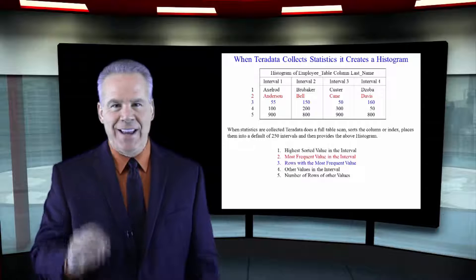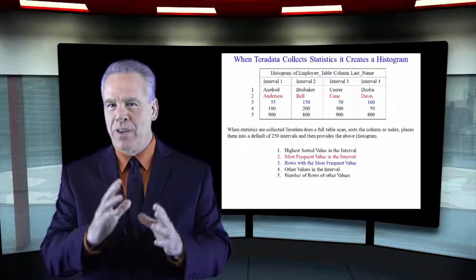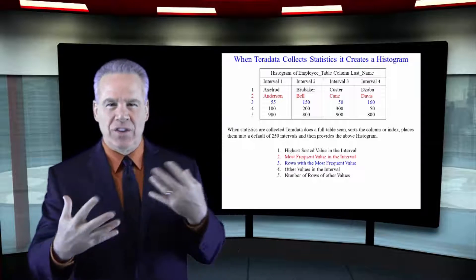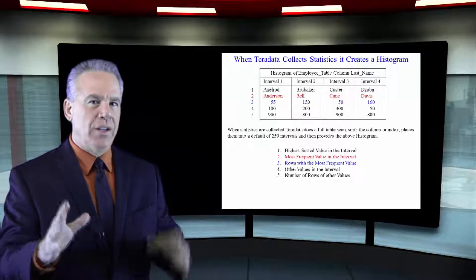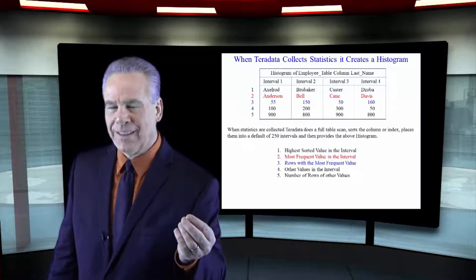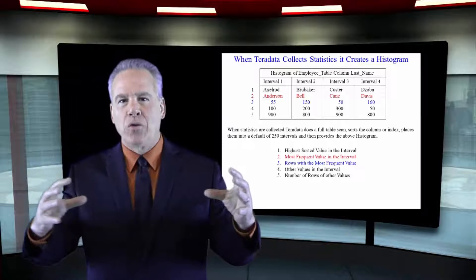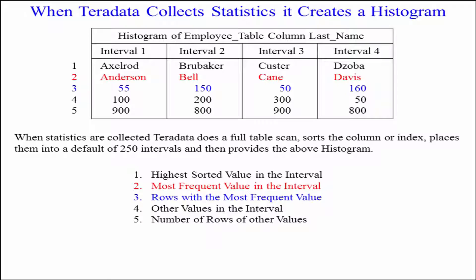When you collect statistics, Teradata creates what's called a histogram. Now, let me describe this visually so you can see it. We just collected statistics on last name. There were 250 million last names in this table. So, when we collect statistics, Teradata is going to go out and gather up all 250 million names in this particular table, last names. And then it's going to sort them from A to Z. Once they're sorted from A to Z,